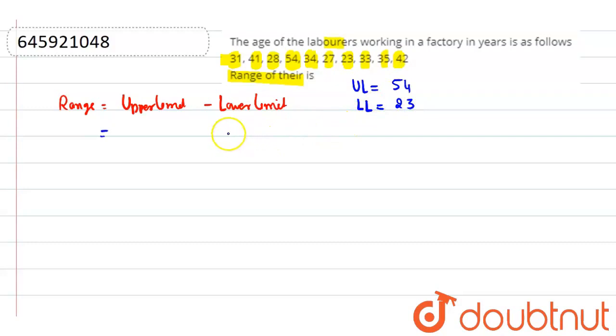So now we calculate the difference of these numbers. The upper limit is 54 and the lower limit is 23. So the difference is equal to 31.